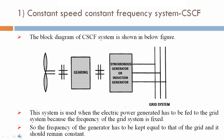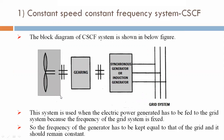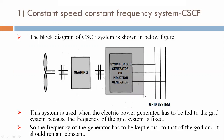First, constant speed constant frequency system - CSCF. The block diagram of the CSCF system is shown in the figure below. Here, the wind turbine symbol is connected with a gearing system, and here a synchronous generator or induction generator - also called an alternator - is connected to the grid system for utilization of electricity.